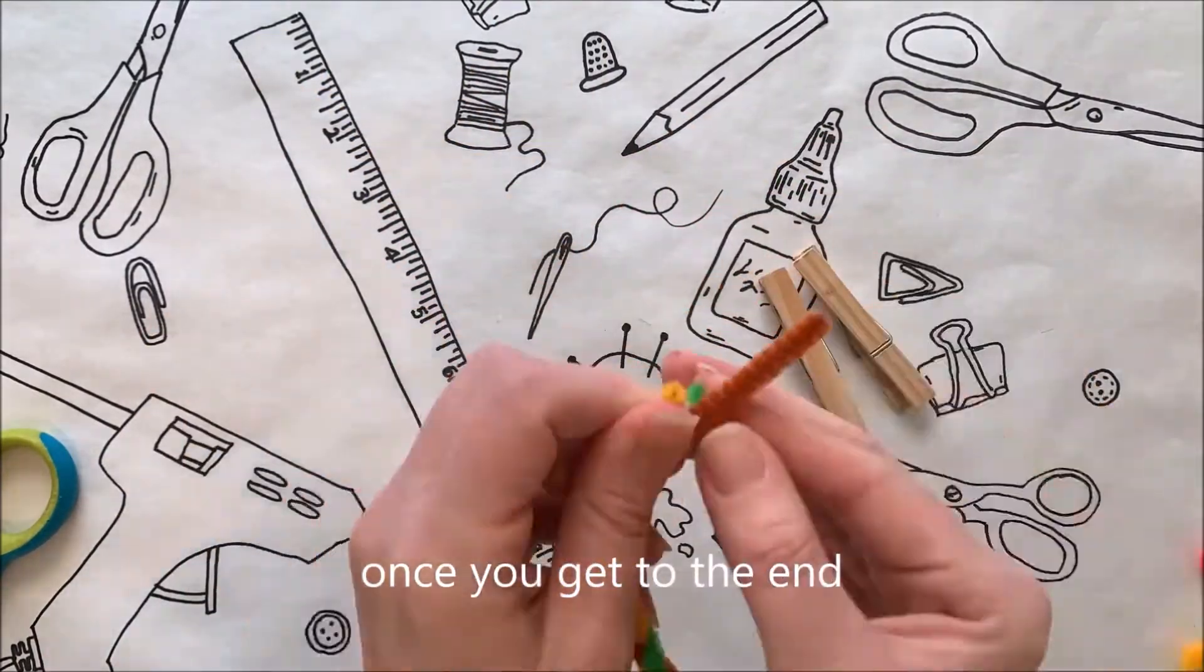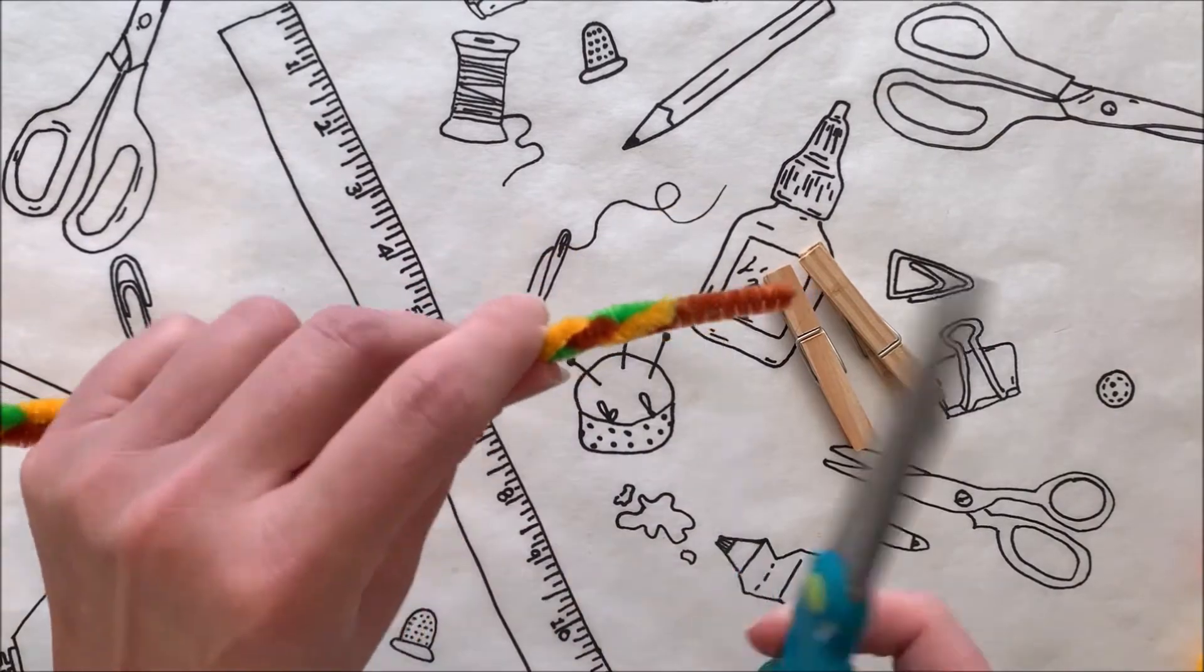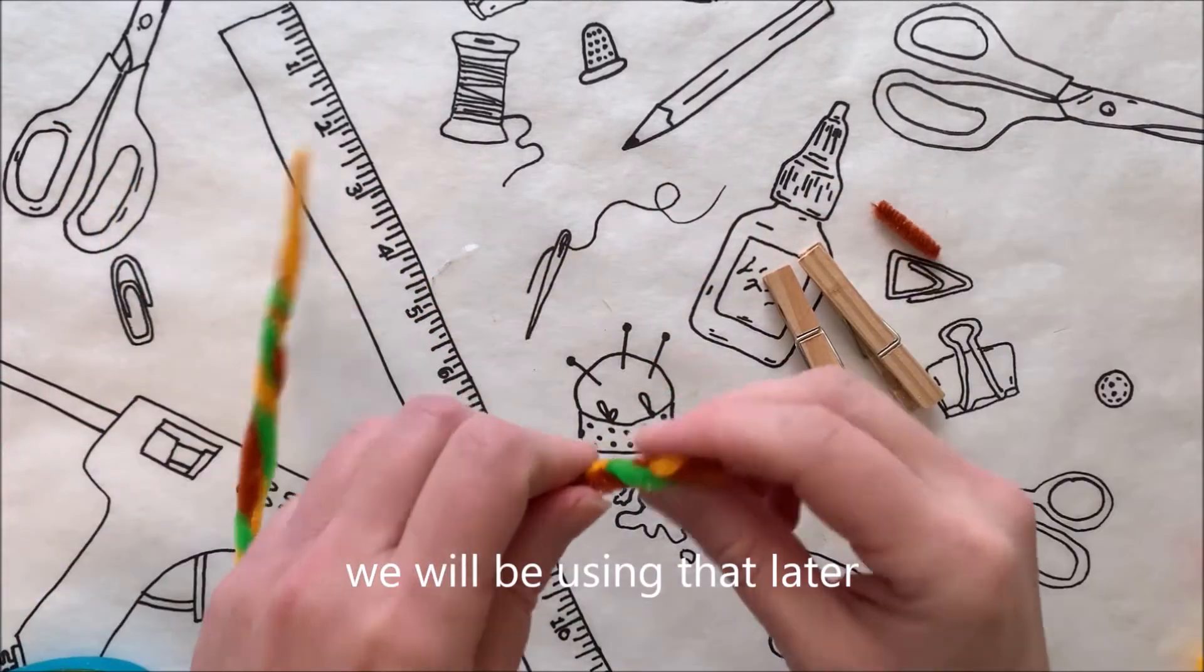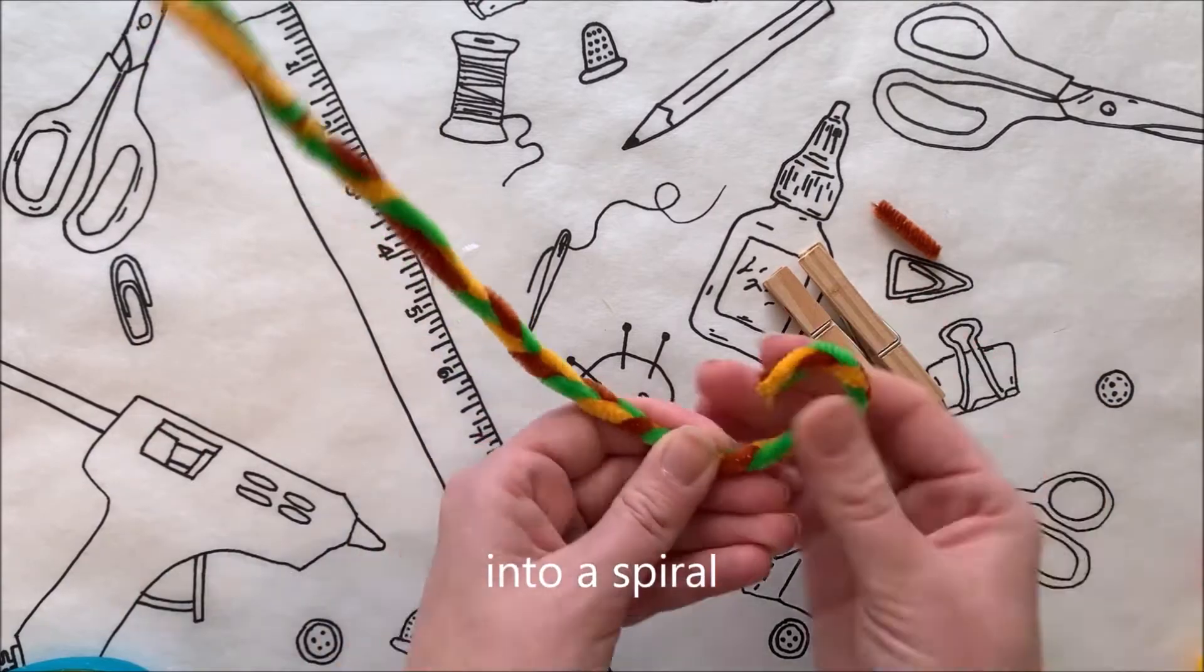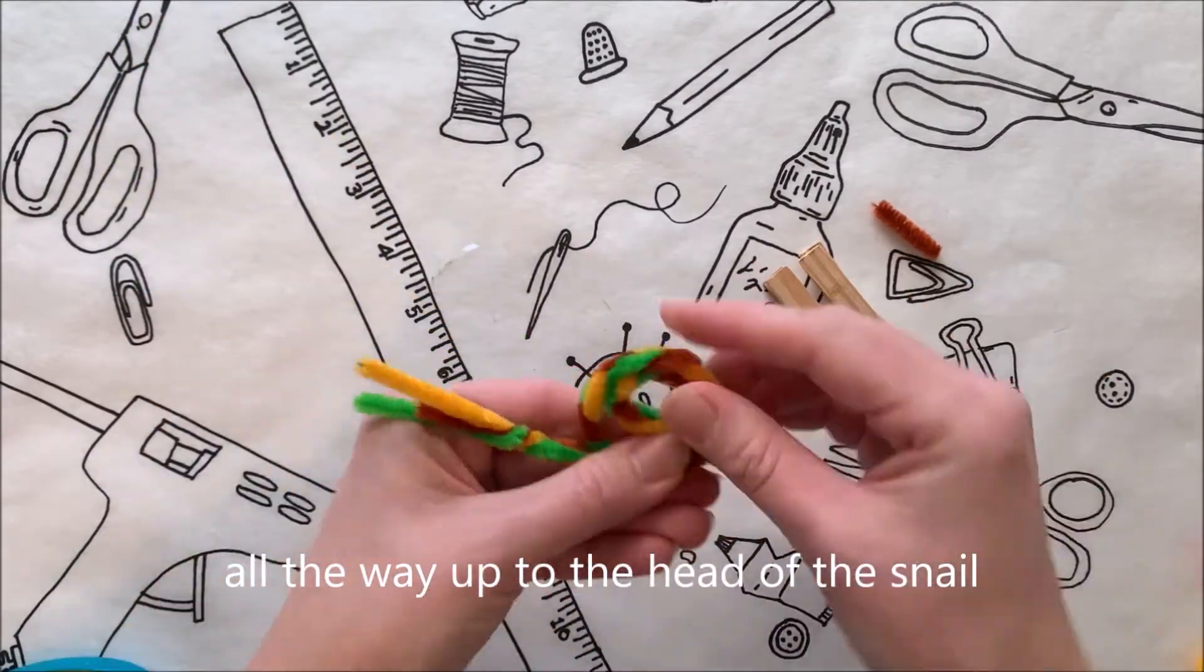I use the traditional braid method. Once you get to the end, you can cut off the leftover middle piece and put it to the side. We will be using that later. Now coil up the rest of the pipe cleaners into a spiral all the way to the head of the snail.